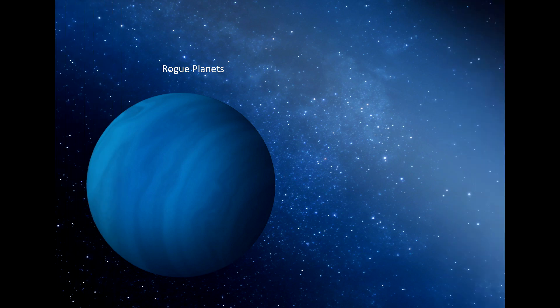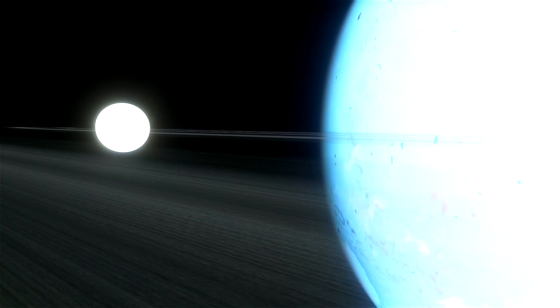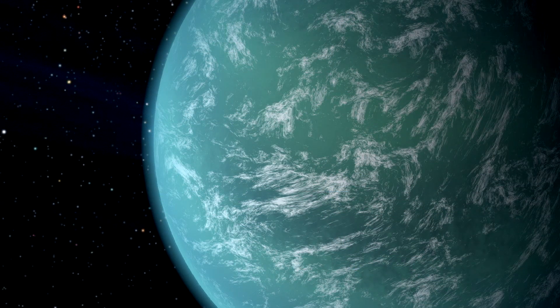Number five: rogue planets. These planets are also known as interstellar planets. They have no orbit of their own. They can move freely in the universe. They are such a type of planetary object which revolves around the galactic center directly instead of orbiting a star. They are ejected from the planetary system where they were born.